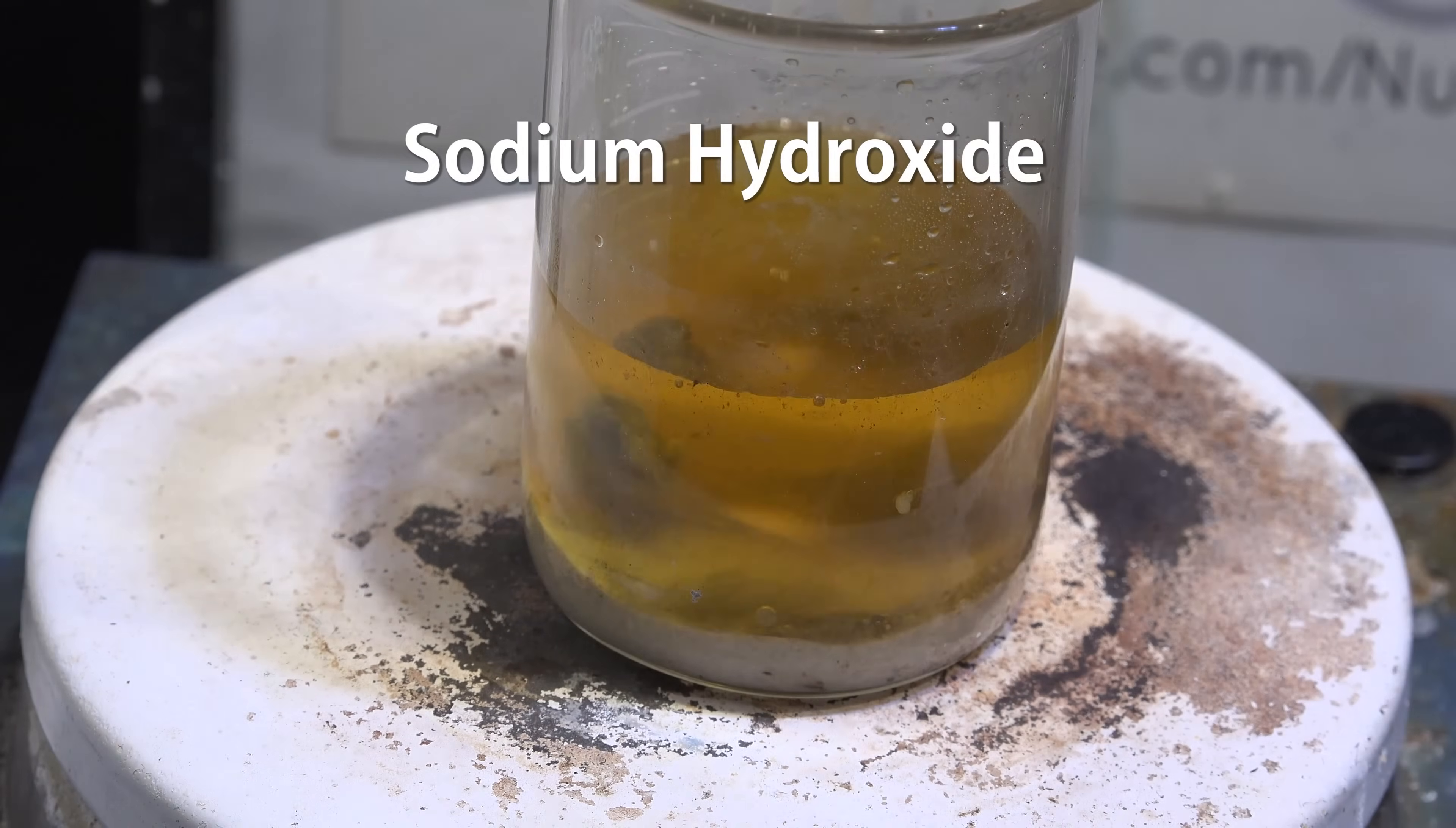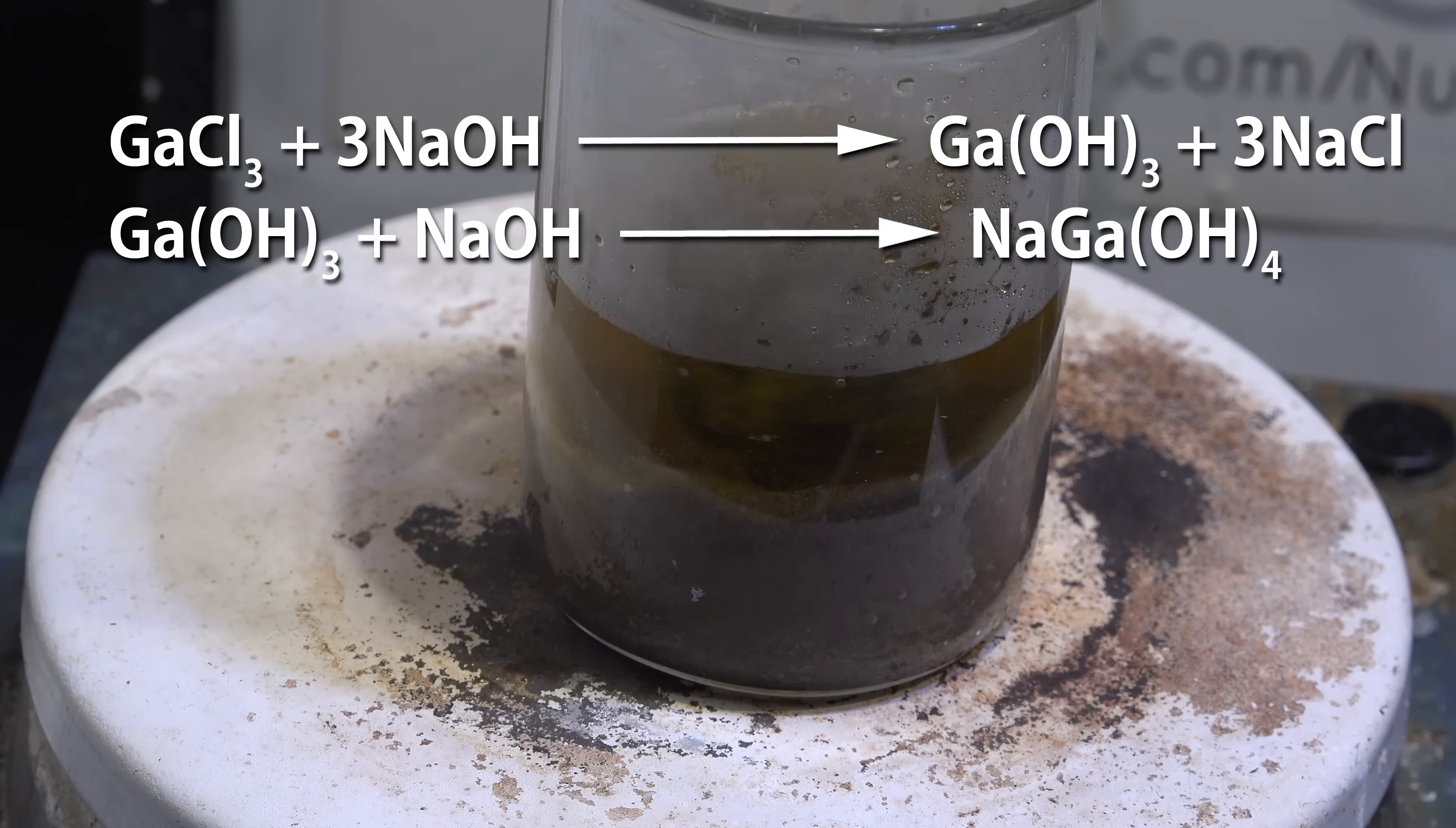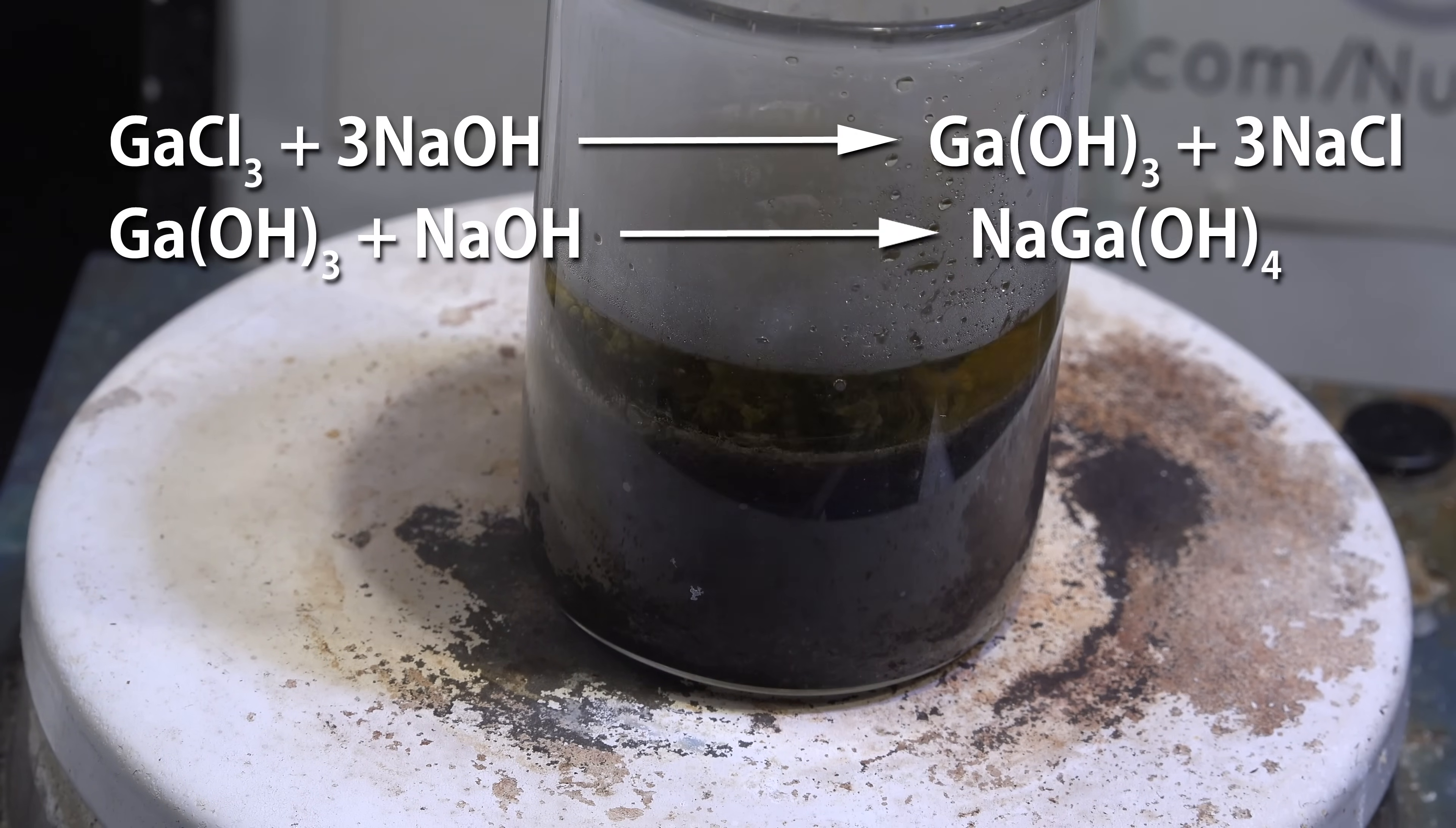Now add in small amounts of sodium hydroxide, about 5% of the solution mass at a time. At first it will form a precipitate of gallium hydroxide.